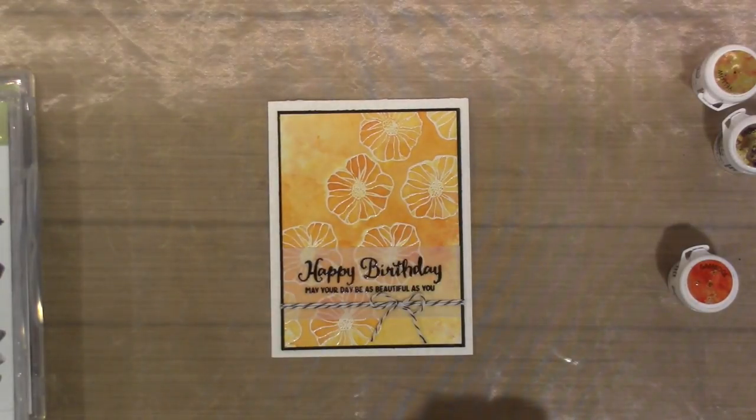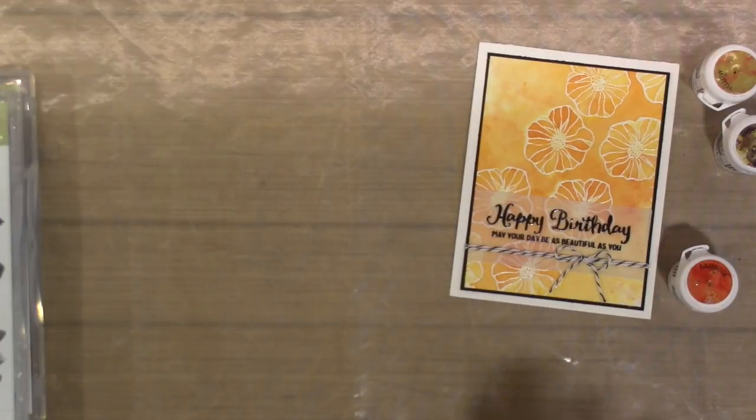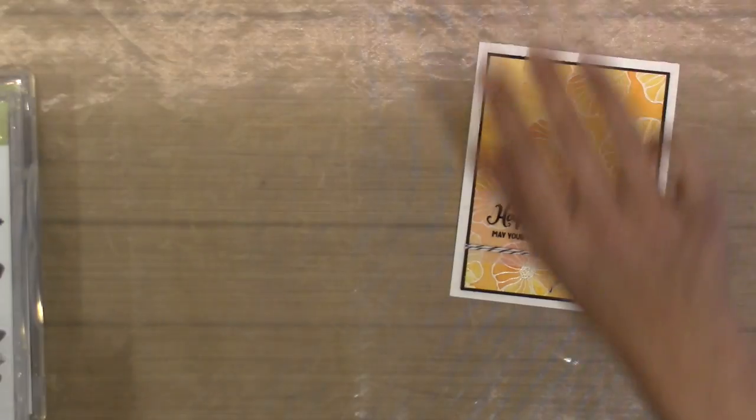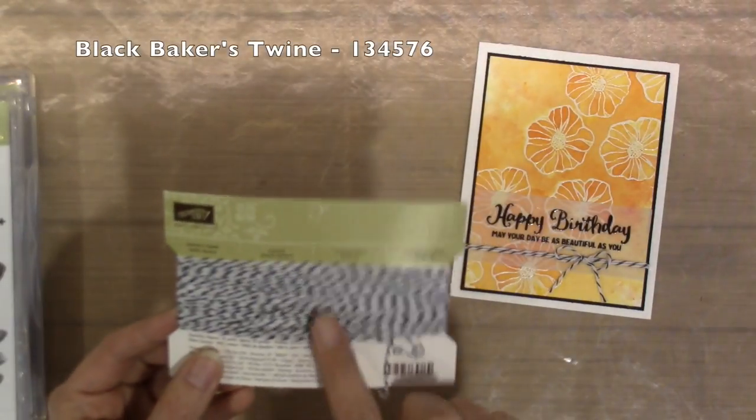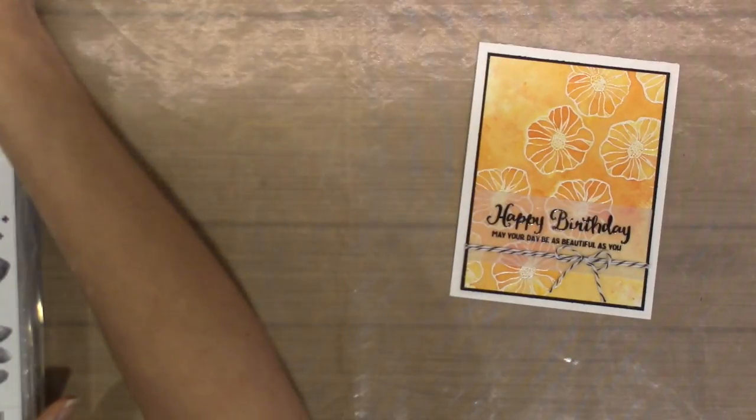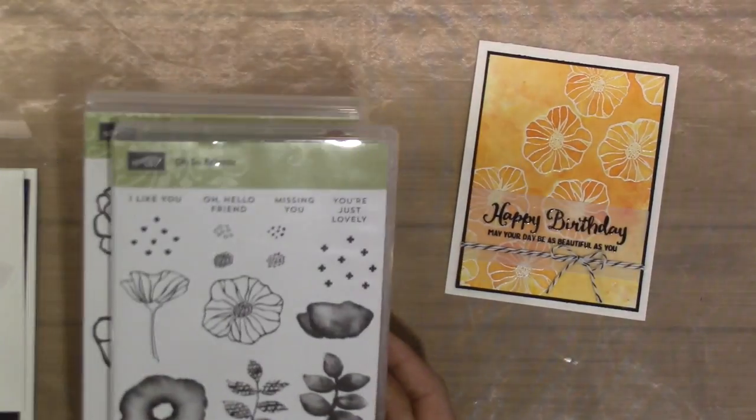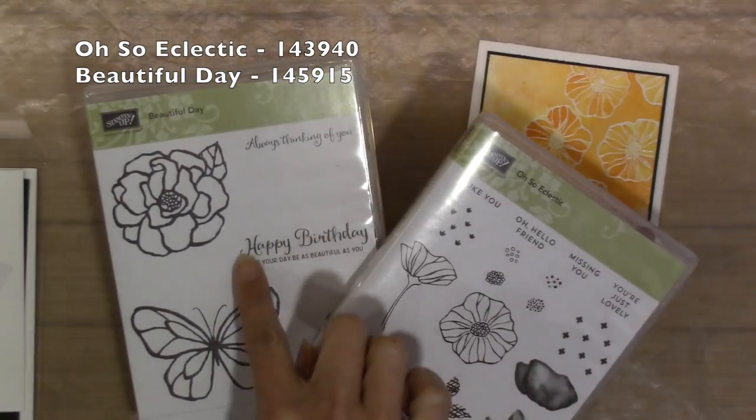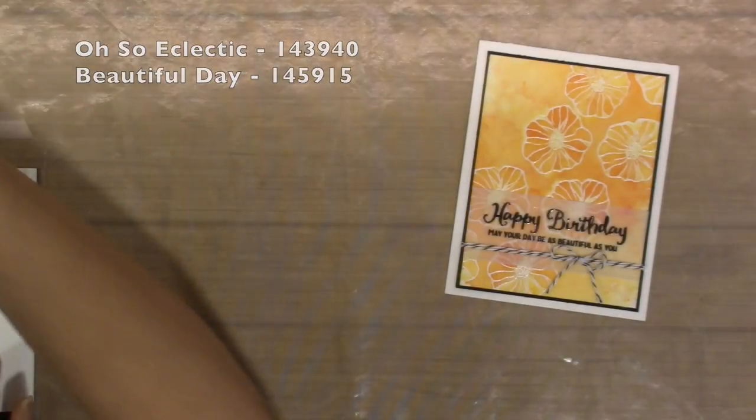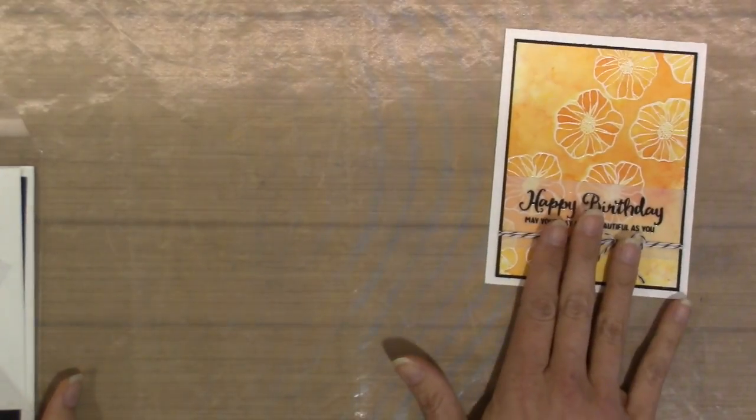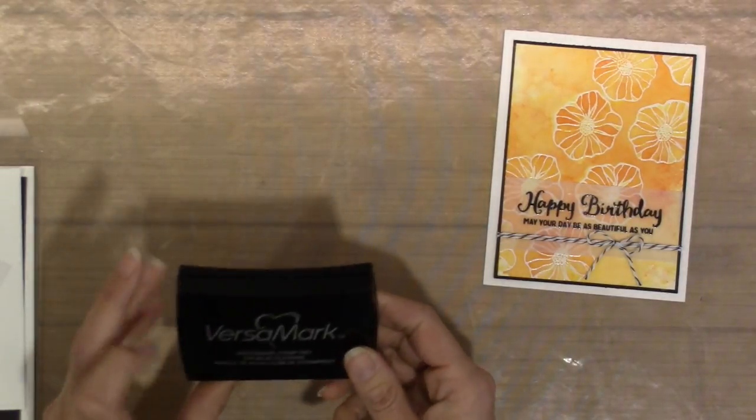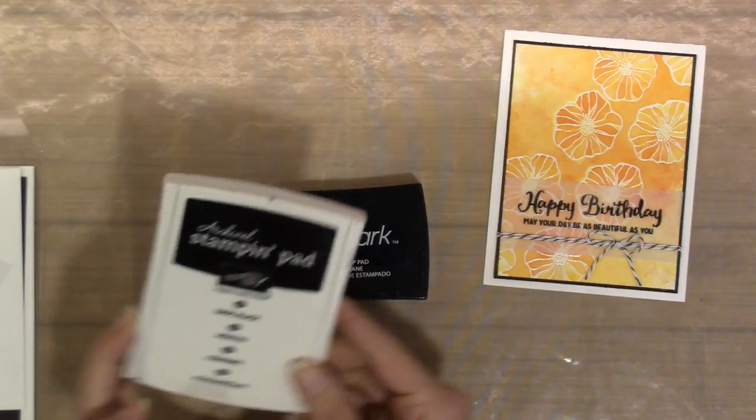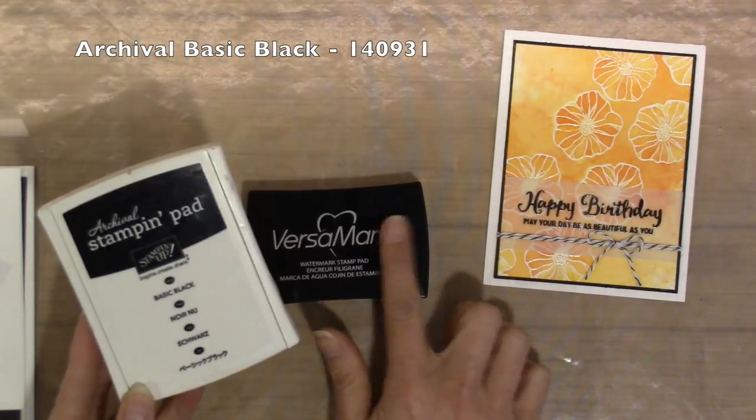Let's get started. I will show you the supplies that I used. And then it will be a little bit longer tutorial. Even if I don't talk, there is quite a bit to this technique. I did add a little bit of baker's twine for my accent. And the stamp sets are the Oh So Eclectic and the Beautiful Day. I used the flower from this one and the happy birthday sentiment from Beautiful Day. You will need some Versamark because we are going to be doing some emboss resist and embossing. I used basic black with the Versamark for my sentiment.